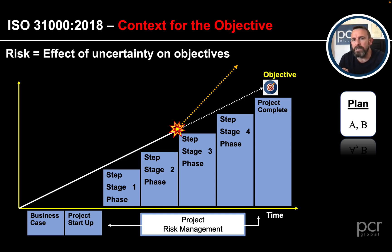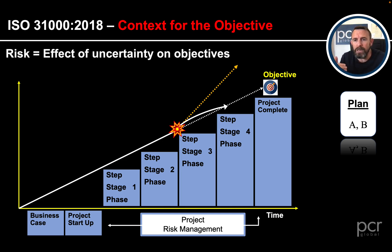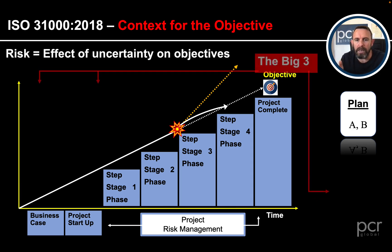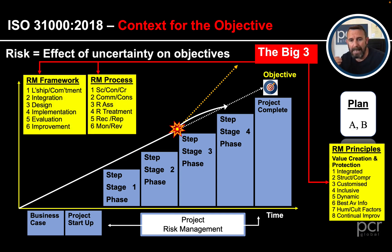We've set the objective, and now let's look at the effect of uncertainty on it. On the slide we've come along to stage three and hit a risk - this could be positive or negative. It is a deviation from the expected, which is one of the definitions. What it does is set us off on a tangent away from the objective. What we need risk management to do is get us back on trajectory toward our objectives.